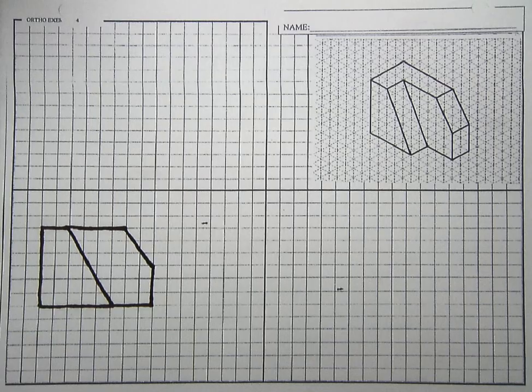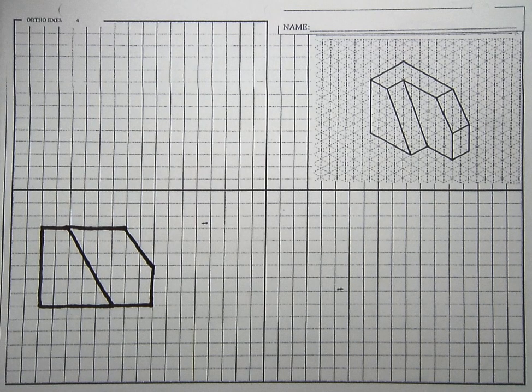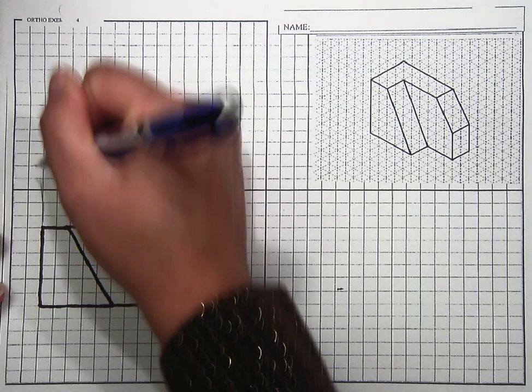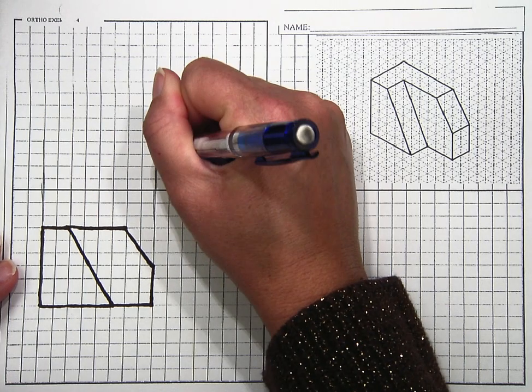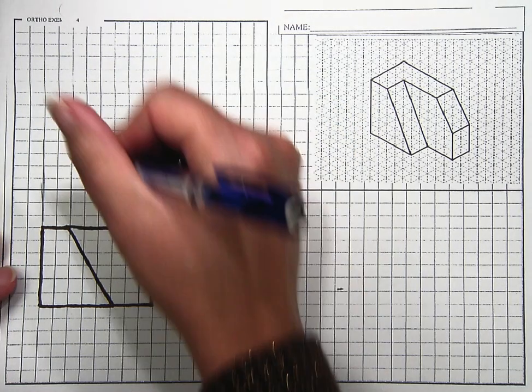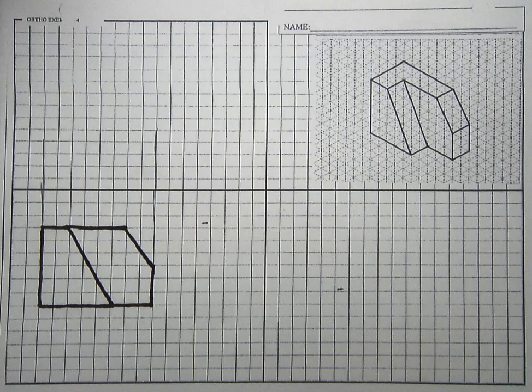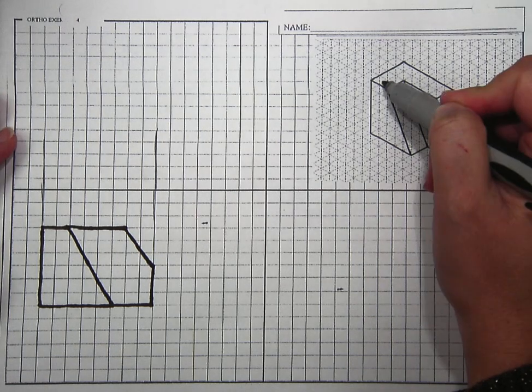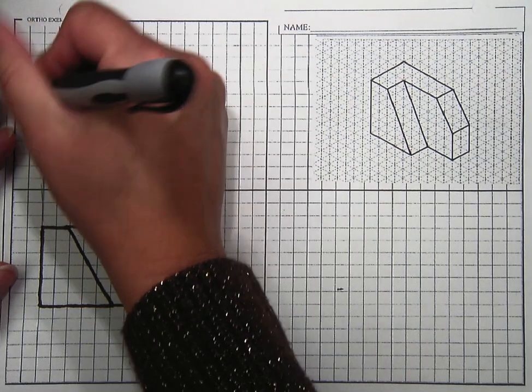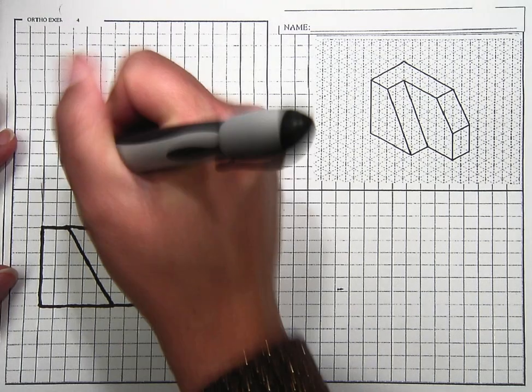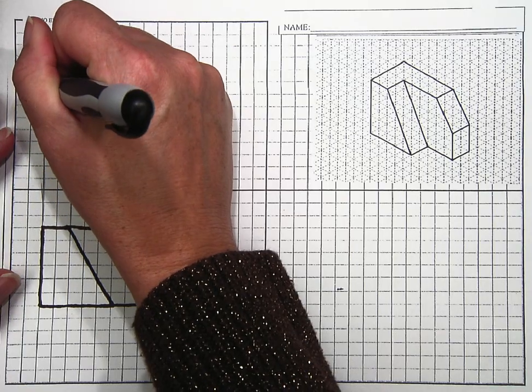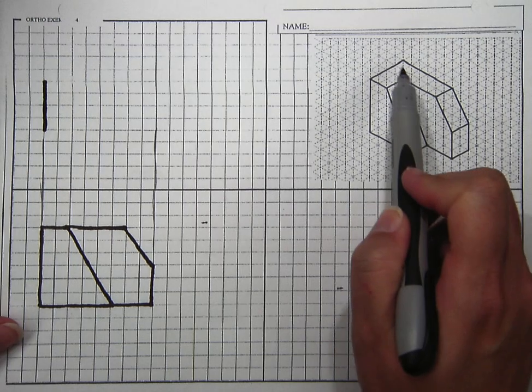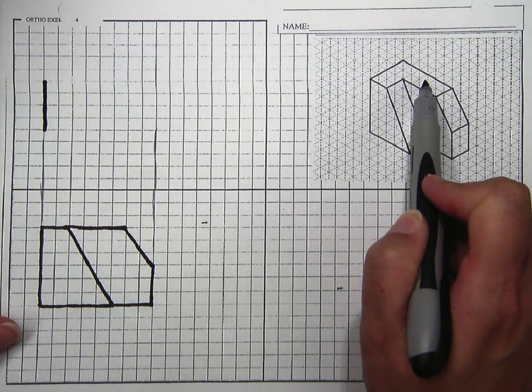Now I want to do the top view. I'm going to use some construction lines just to show you that I want it to project on the same lines. Notice I'm going to have these lined up. So the top view, I count 1, 2, 3, 4. So using on that same lines, I'm going to go 1, 2, 3, 4. And I count over 1, 2, 3, 4, 5, 6.